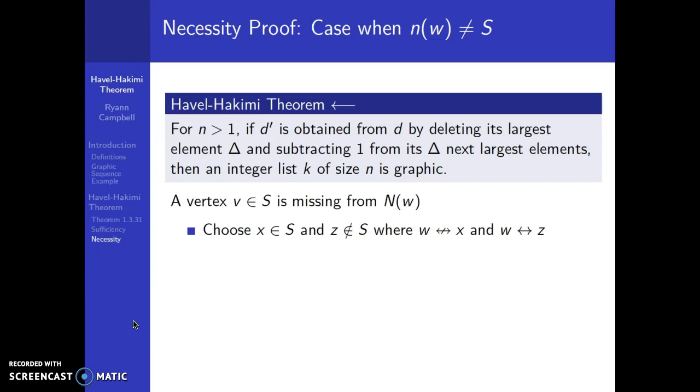So here's the case where the neighborhood of w is not equal to S. So we have a vertex v in S that is missing from the neighborhood of w. So we are going to choose, let's choose vertex x that's in S and vertex z that is not in S, but we have to be specific about that.